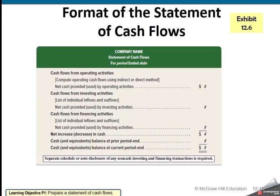The format of the statement of cash flows has three sections: cash flows from operating activities, cash flows from investing activities, and cash flows from financing. If it's a positive number, it would be net cash provided by operating activities. If it's a negative number, it would be net cash used by investing activities. We subtotal those three sections, which gives us our increase or decrease in cash. We add that to our beginning balance — our prior period ending balance — and that should tie out to our ending cash balance, which we always want to trace to the balance sheet.